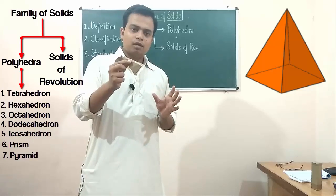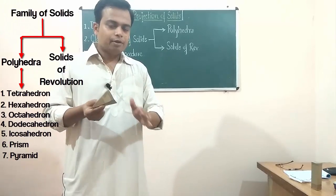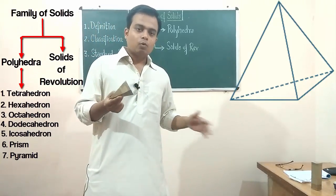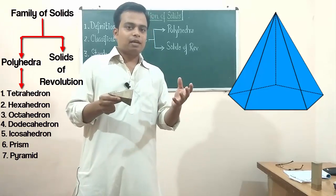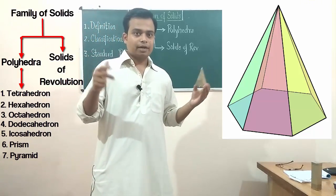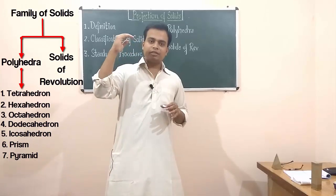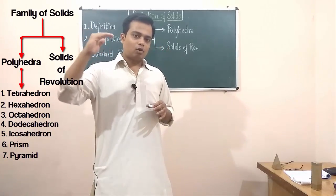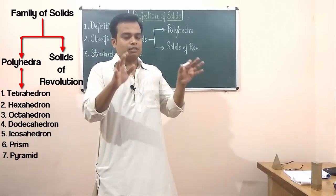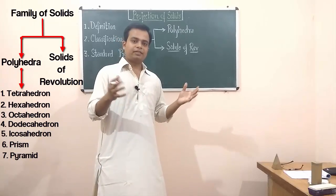The type of pyramid depends on the shape of its base. Replacing the square base with a triangle gives a triangular pyramid; with a pentagon gives a pentagonal pyramid; with a hexagon gives a hexagonal pyramid. So in total we have seven types of polyhedrons: tetrahedron, hexahedron, octahedron, dodecahedron, icosahedron, prism, and pyramid.